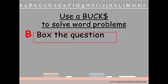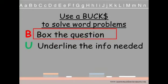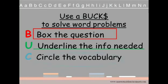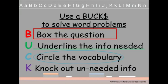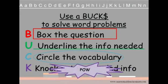B — box the question. U — underline the information needed to solve the problem. C — circle the vocabulary that you'll need to know in order to answer the question. And K — knock out the unneeded information. Many people get confused because they look at information that's not relevant to the question.